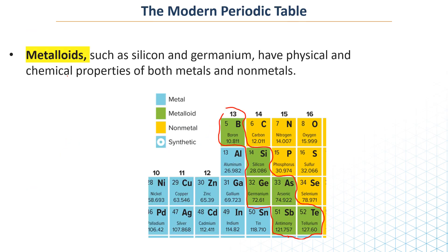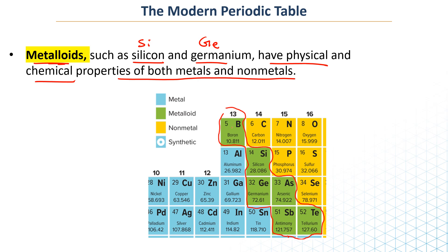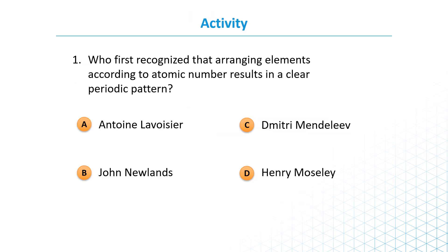Metalloids such as silicon (Si) or germanium (Ge) have physical and chemical properties of both metals and non-metals. These are the green elements on the periodic table — they are in between metals and non-metals, having properties from both sides. And that's it, guys — let's go and solve some questions.